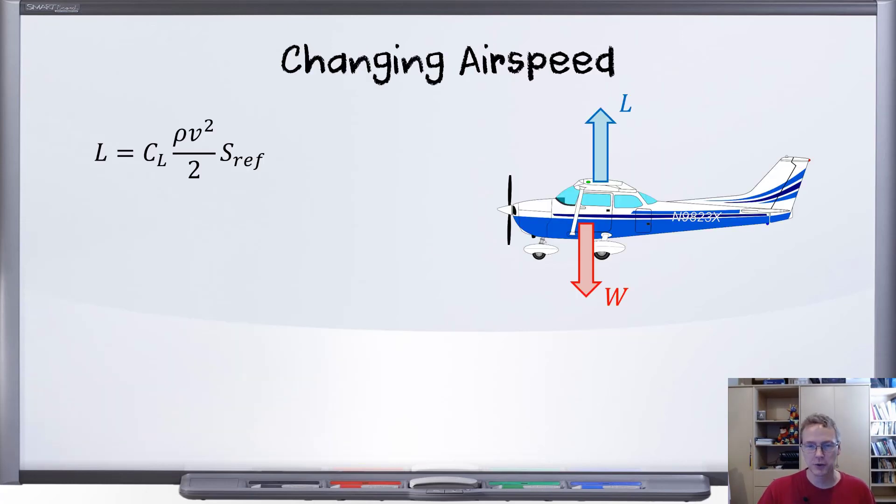As long as we've got the lift equation up, let's take a quick look at airspeed, which appears here in the equation. If we are to increase the airspeed, for example, I think you can see that that will cause the lift to also increase. Increasing airspeed increases lift, so that the lift of the aircraft has increased, it no longer balances the weight, and the aircraft is going to start climbing. We're going to need to do something to bring that lift back down.